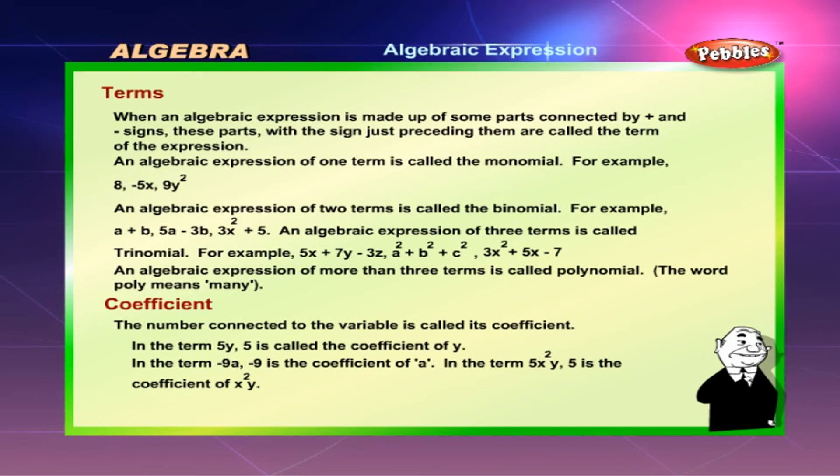An algebraic expression of three terms is called a trinomial. For example: 5x + 7y - 3z, a² + b² + c², 3x² + 5x - 7. An algebraic expression of more than three terms is called a polynomial.